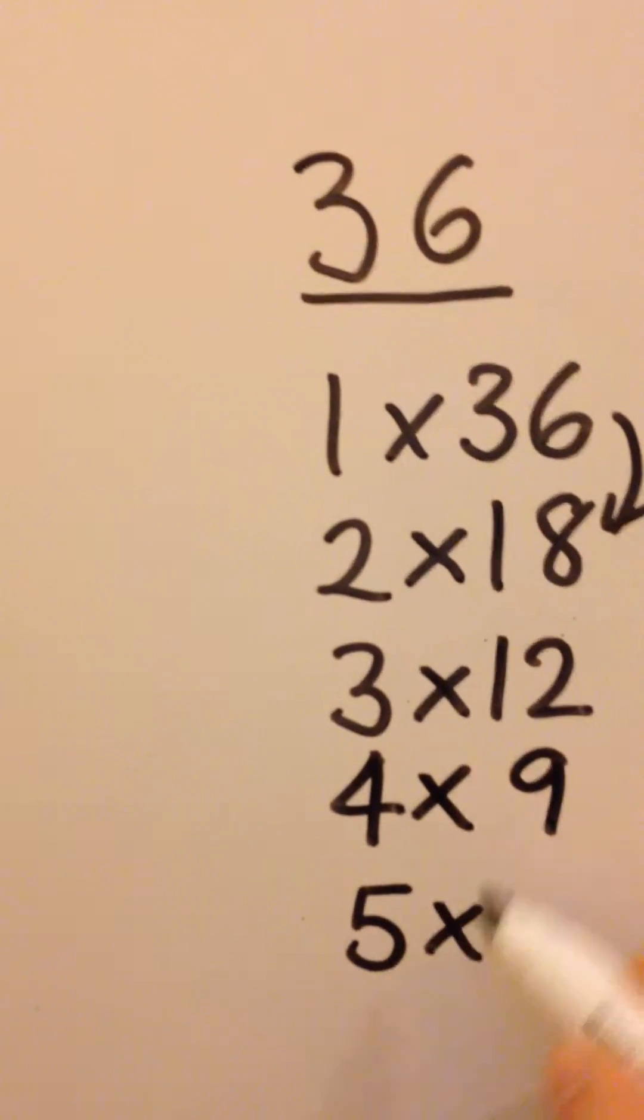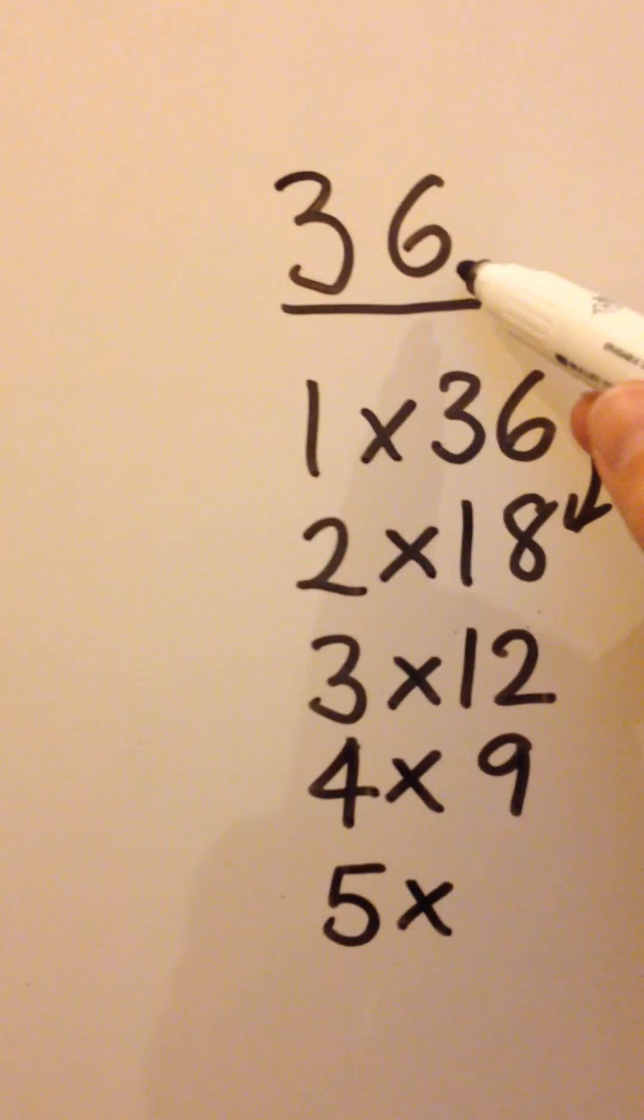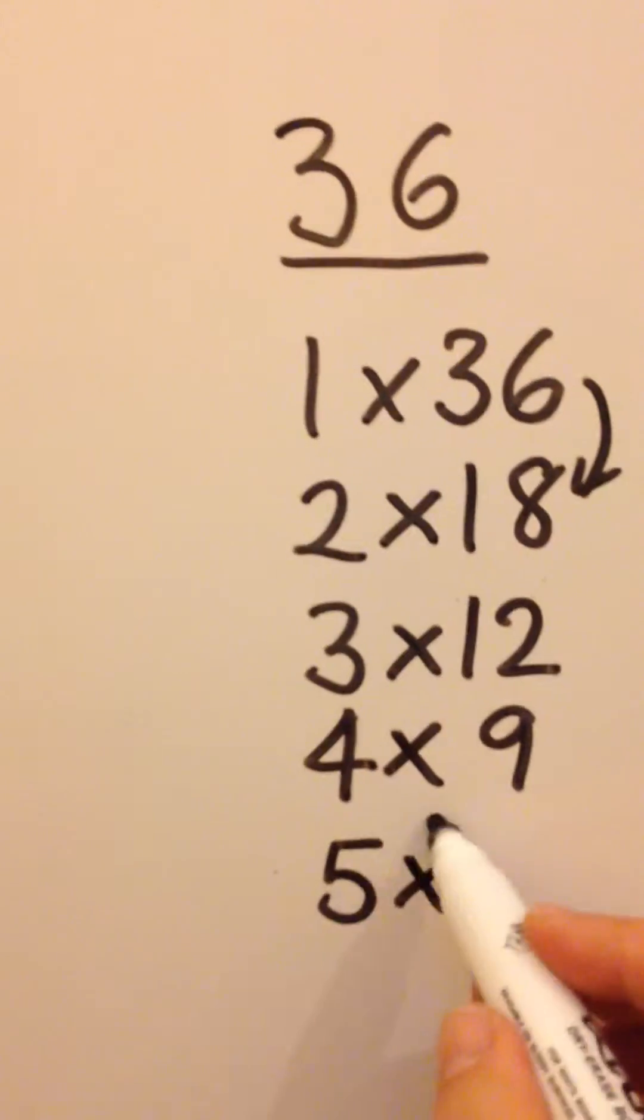5 times, instantly I know that it's not in the 5 times table, it doesn't end with a 0 or a 5, so I can cross off my 5.